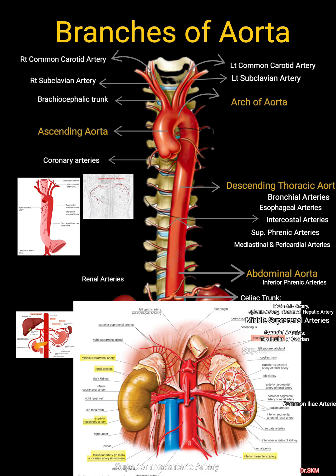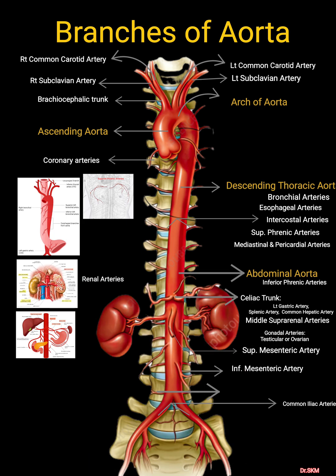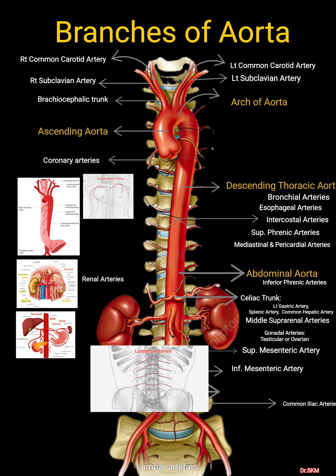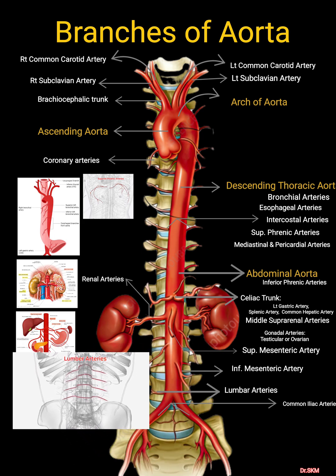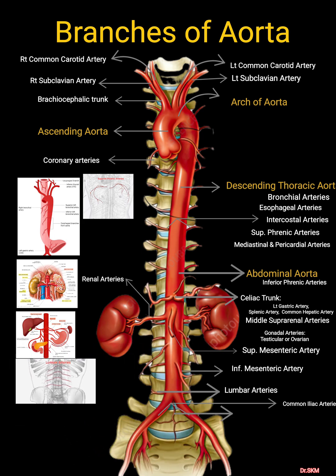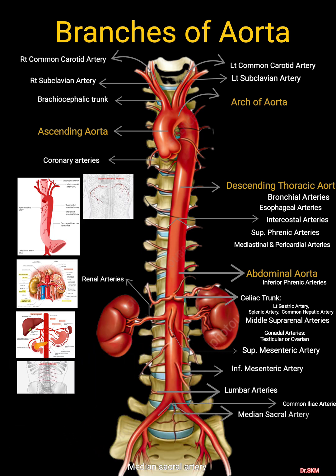The superior mesenteric artery supplies the small intestine and proximal colon. The inferior mesenteric artery supplies the distal colon and rectum. Lumbar arteries supply the posterior abdominal wall and spinal cord, and the median sacral artery supplies the lower spine and sacrum.